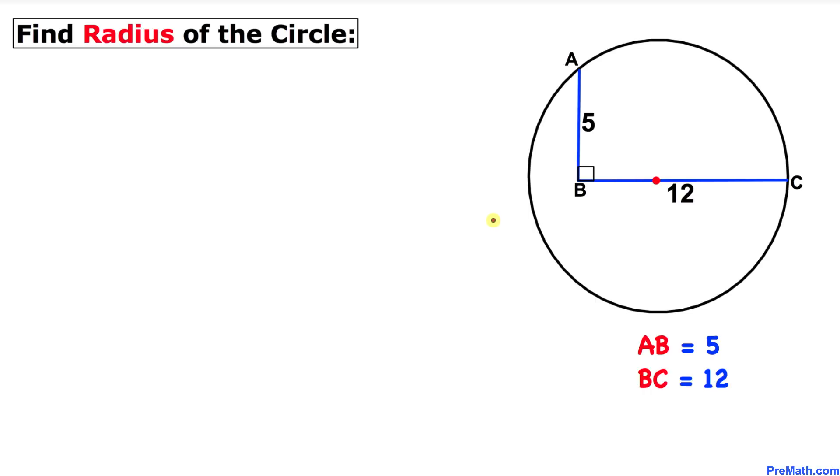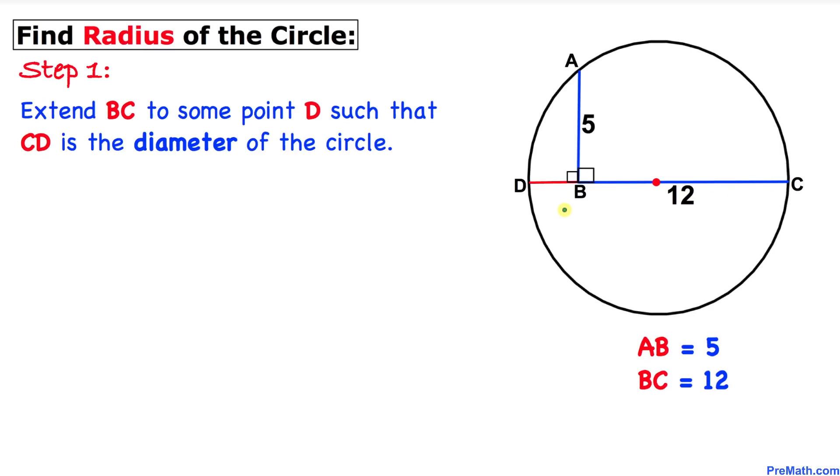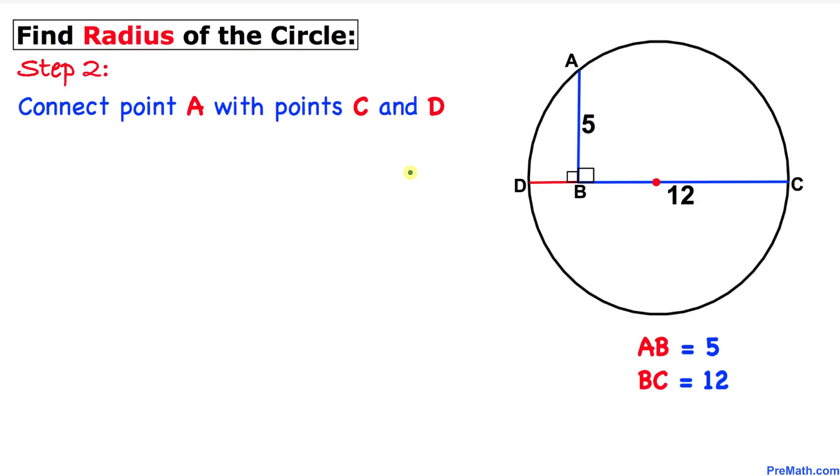Let's get started with the solution. Here's our first step: extend this line segment BC to some point D on this circle such that CD is the diameter of this circle. Here's our nicer looking diagram, and keep in mind that CD is the diameter.